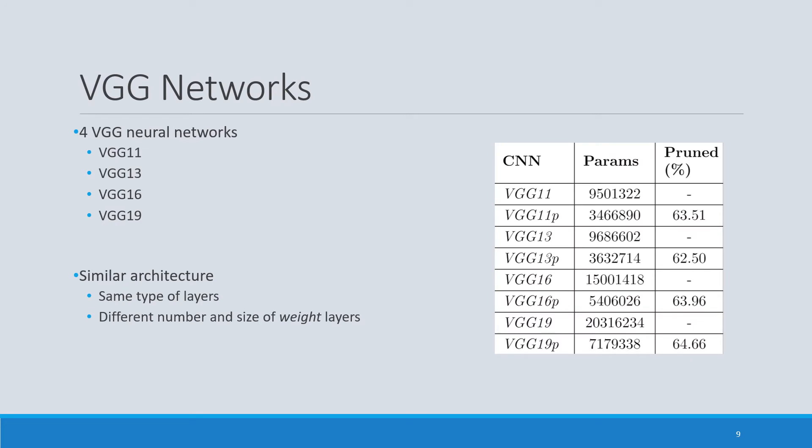The neural networks employed in this study are the VGG family: VGG11, 13, 16, and 19. All these networks have a similar architecture; they differ in the number of weight layers, the size of those layers, and their count. For each of these four neural networks, we prune them using a technique called L1 norm-based channel pruning. In the table on the right, we can see that we prune around 63–64% of the parameters in each network, reducing networks from 3.5 million parameters down to around 20 thousand.